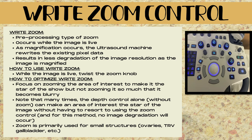To optimize write zoom, you want to focus on zooming the area of interest to make it the star of the show, but not zooming so much that it becomes blurry. Note that in many cases, the depth control alone — without zoom — can make an area of interest the star of the image without resorting to the zoom control, and no image degradation will occur while using depth. Zoom is primarily used for small structures such as ovaries or the transverse gallbladder, but always be wary that the more you zoom, the less image resolution and the more blurriness you'll have.